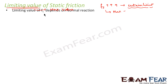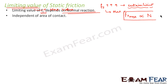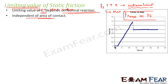The limiting value of static friction depends on normal reaction N. So Fs maximum is directly proportional to N. Also, this value of static friction is independent of the area of contact — it doesn't matter whether the area of contact of the two bodies is big or small. Looking at this graph, when no external force is applied the value of static friction is zero. After that, the value of friction increases with the applied force — this increasing portion is static friction. Static friction reaches a certain maximum value, and this point refers to the limiting value of static friction.